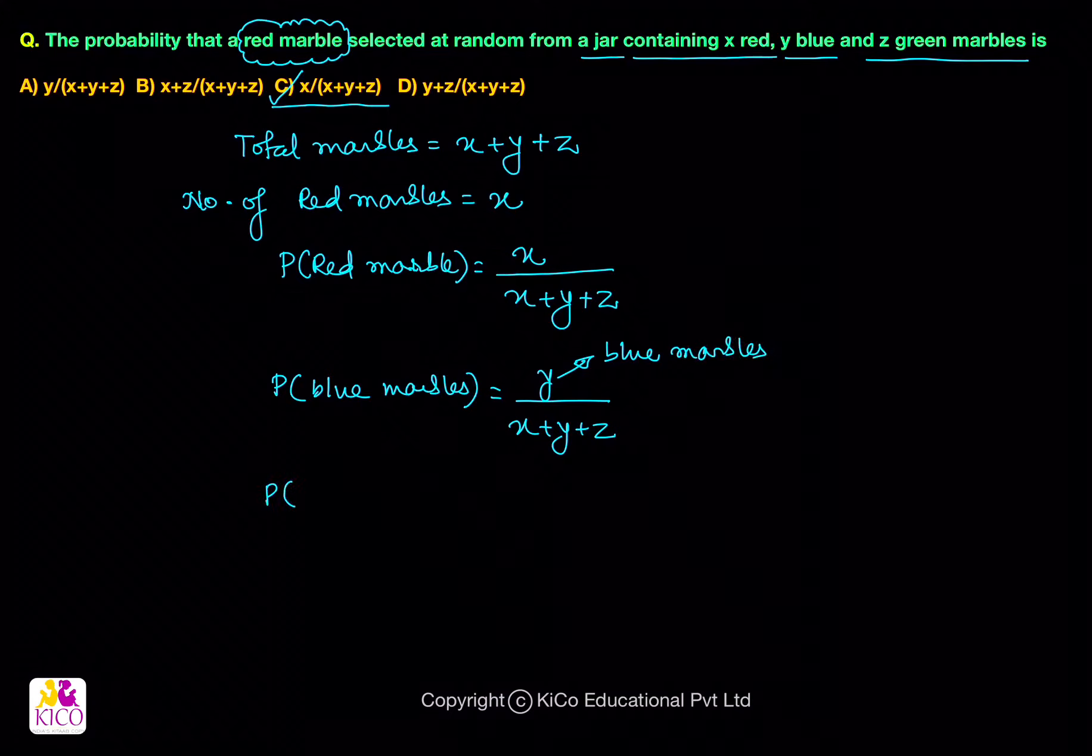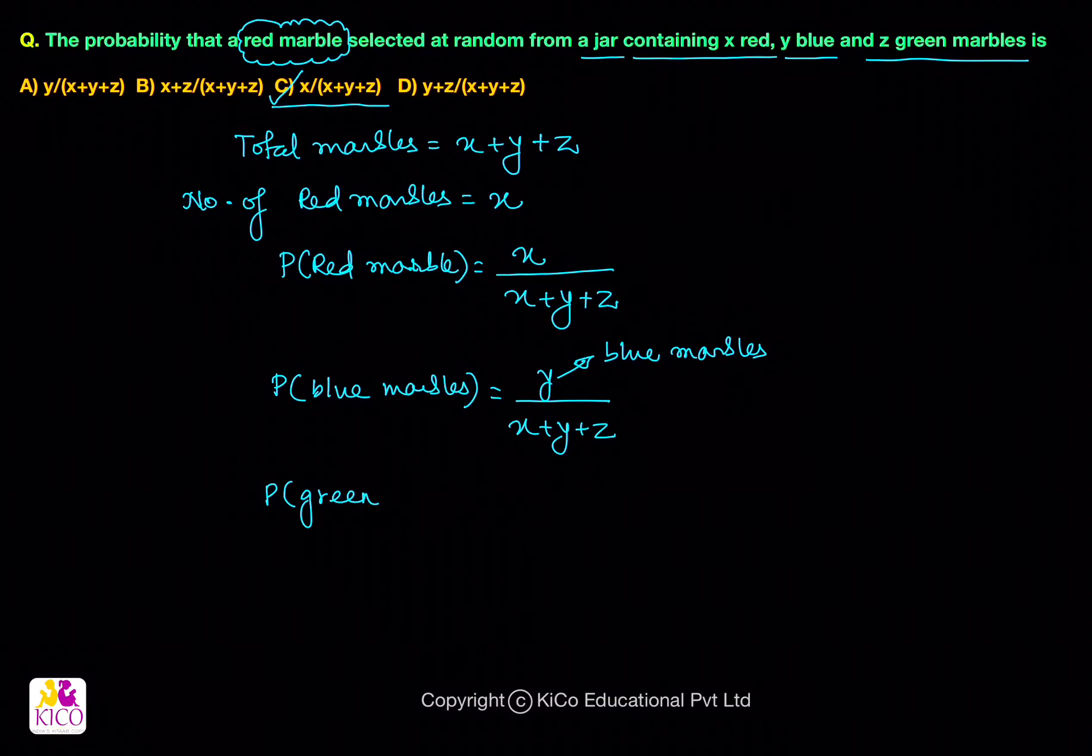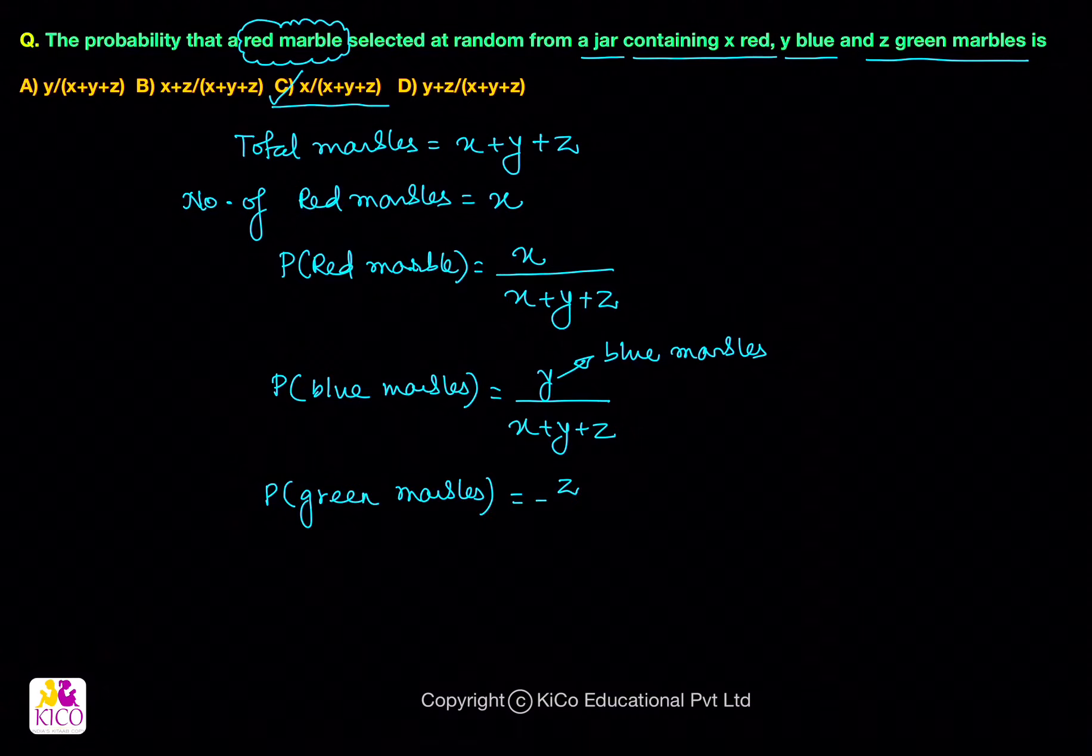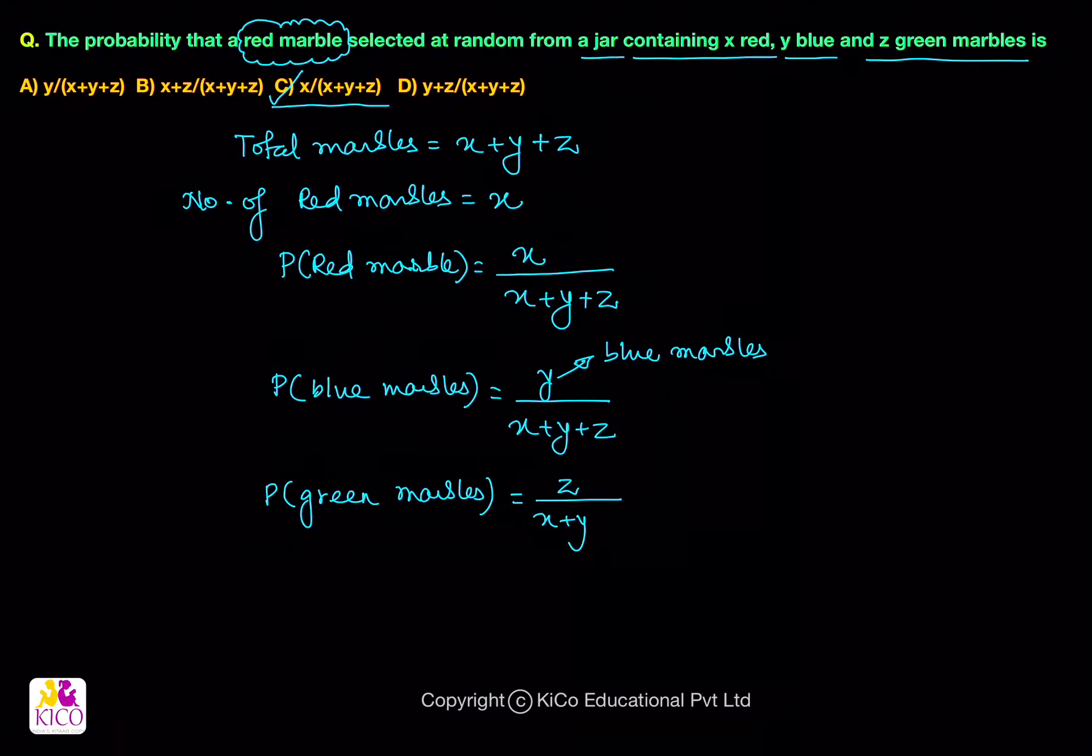Similarly, we can also find out the probability of green marbles. So, the probability of green marbles has to be z upon total number of marbles, that is x plus y plus z.